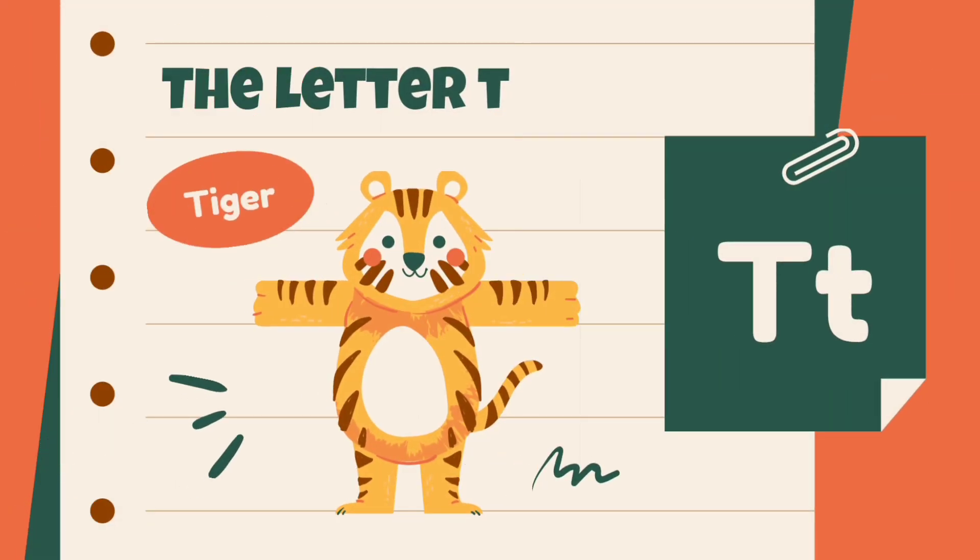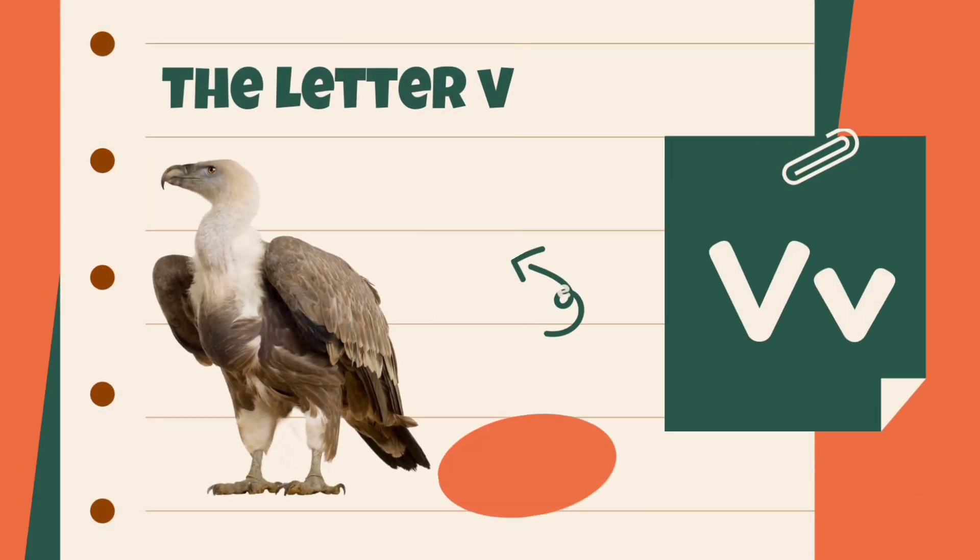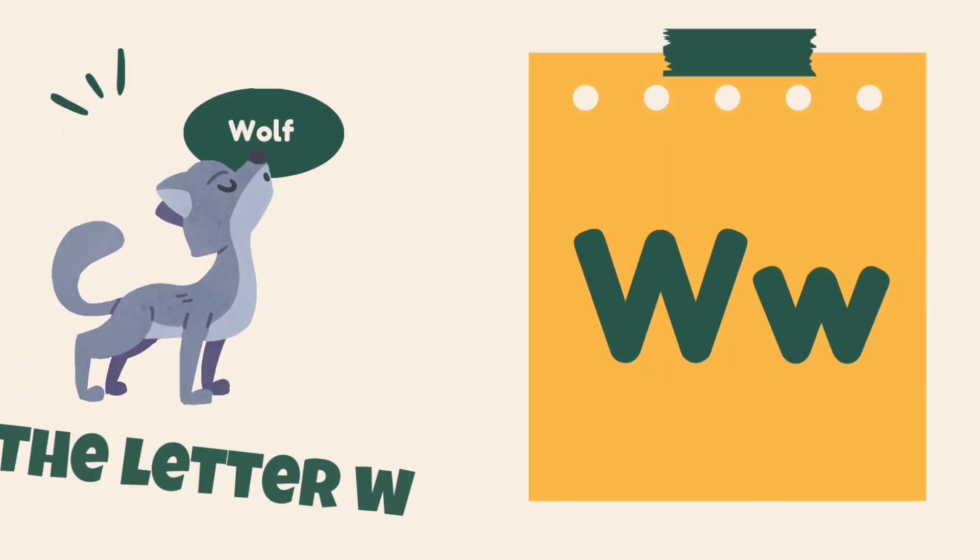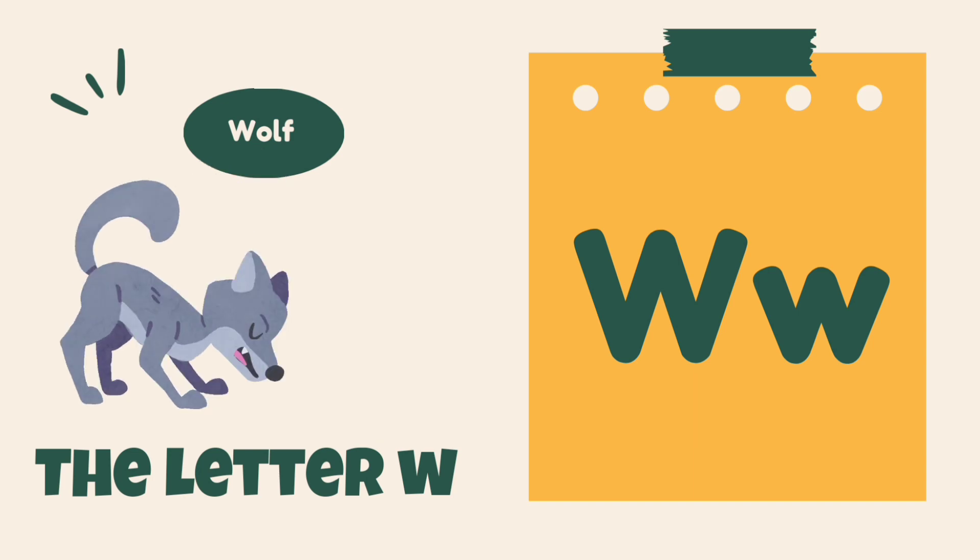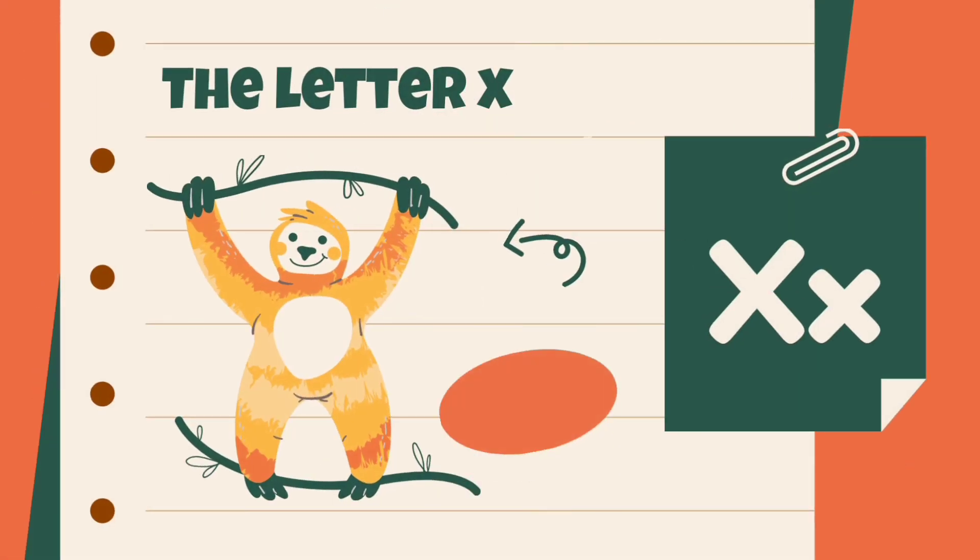U is for unicorn, unicorn. V is for vulture, vulture. W is for wolf, wolf. X is for zanarthra, zanarthra.